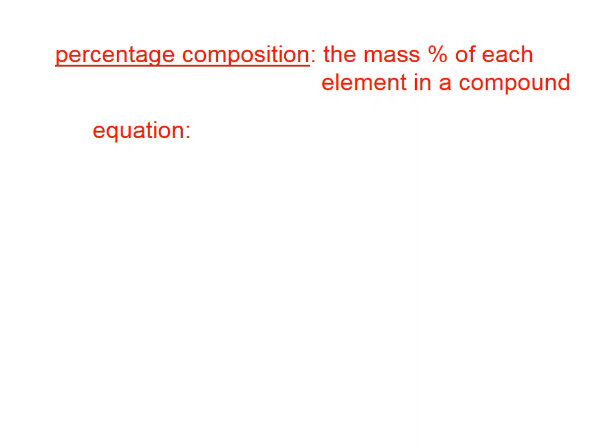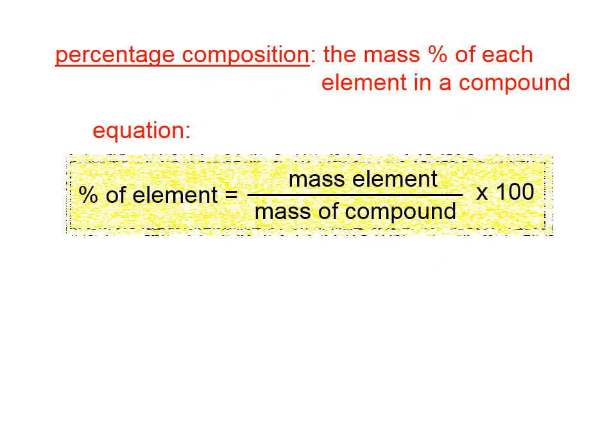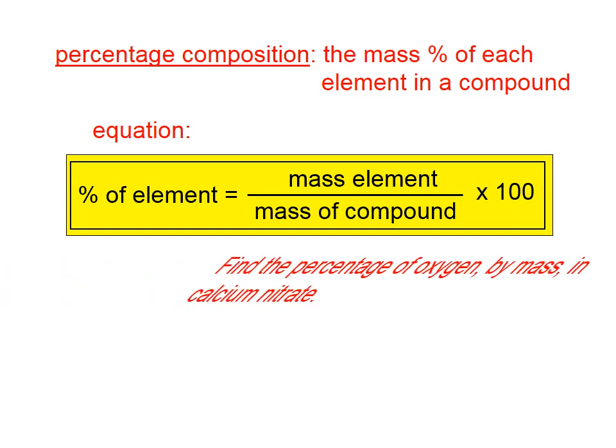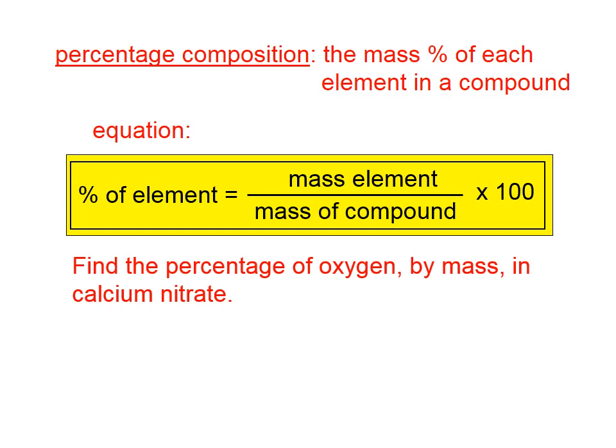Let's finish up this lesson by talking about percentage composition. Percentage composition is the mass percentage of each element in a compound. In other words, it's the mass of any particular element divided by the mass of the compound and multiplied by 100 to put it in percentage form.